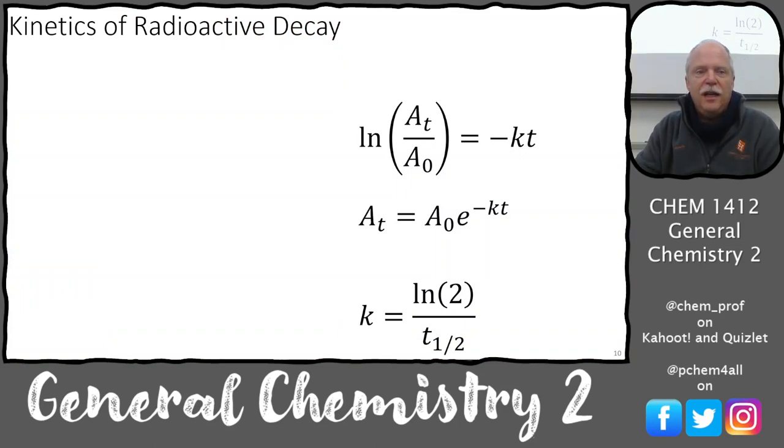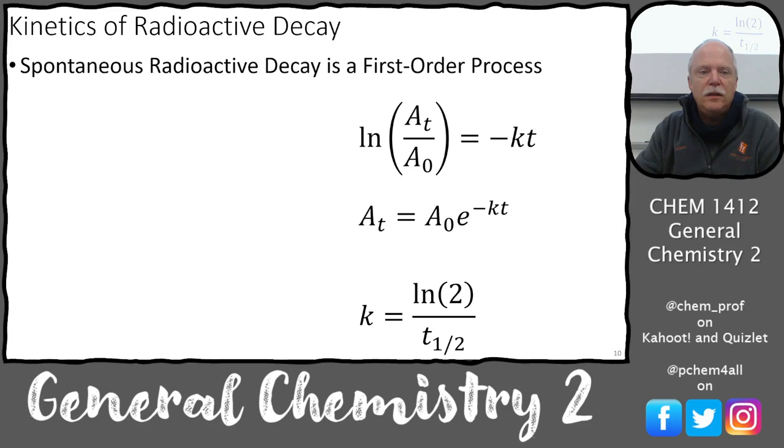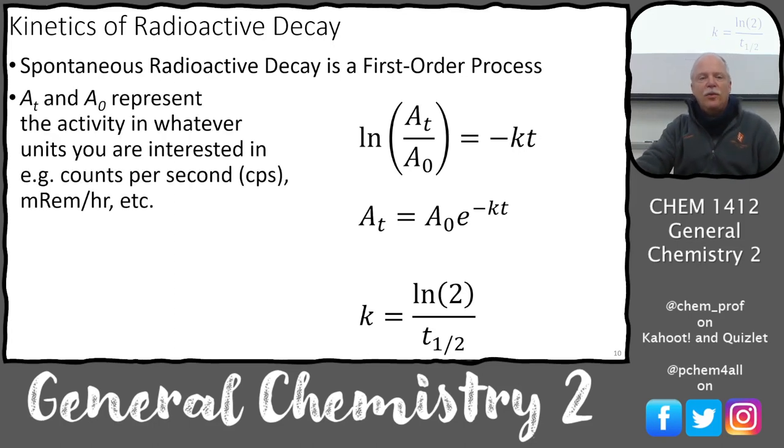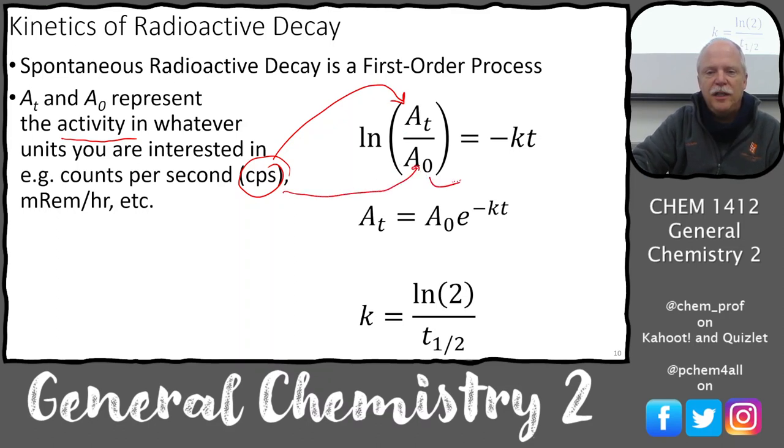Let's look at the kinetics of radioactive decay. Spontaneous radioactive decay is a first order process. The A's in these equations can represent the activity in whatever units you're interested in. A lot of times we're dealing with counts per second. And so these would go in here. This would be the initial, and this is the counts per second after time T, right? So you go a certain time, that's the new activity in counts per second. So it's not that difficult. Let's do an example of this for radioactive dating.